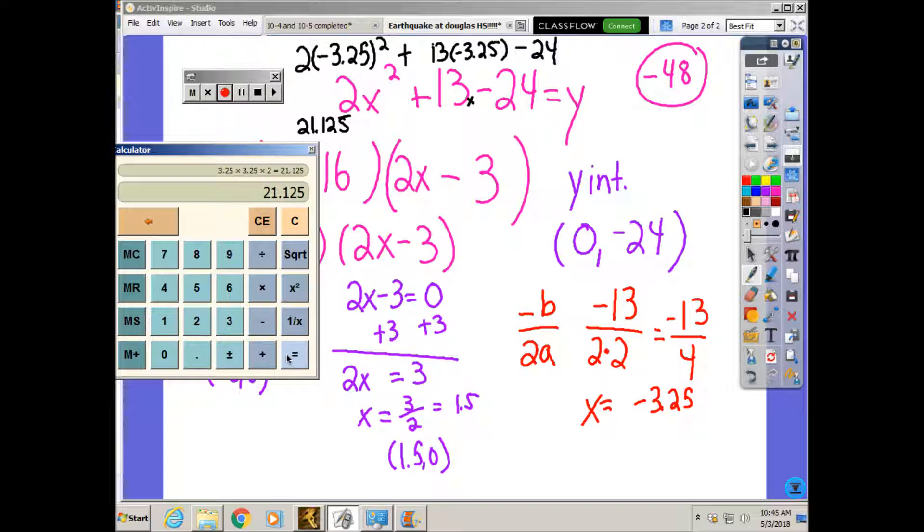Now 13 times negative 3.25. I don't really like doing signs in my calculator. I know that 13 and a negative is going to be a negative.